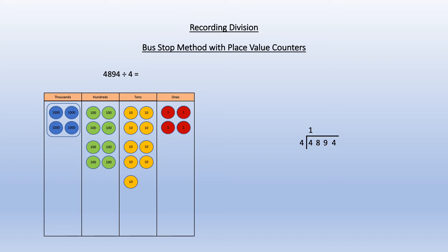Now because we're dividing by four we will look for groups of four in each place value and record them in the bus stop. There is one group of four in the thousands so we circle that and record one in the thousands position of the bus stop. There are two groups of four in the hundreds column and we circle those putting a two into the relevant position on the bus stop.